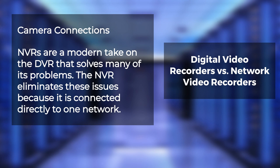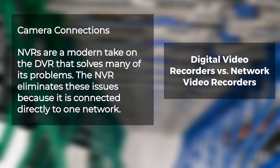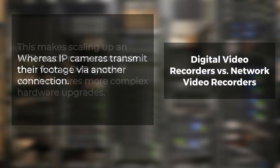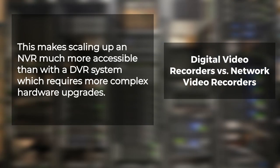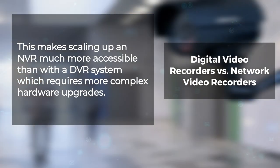Regarding camera connections, NVRs are a modern take on the DVR that solves many of its problems. The NVR eliminates these issues because it is connected directly to one network, whereas IP cameras transmit their footage via another connection. This makes scaling up an NVR much more accessible than with a DVR system, which requires more complex hardware upgrades and installation processes in order for new systems to work properly together.